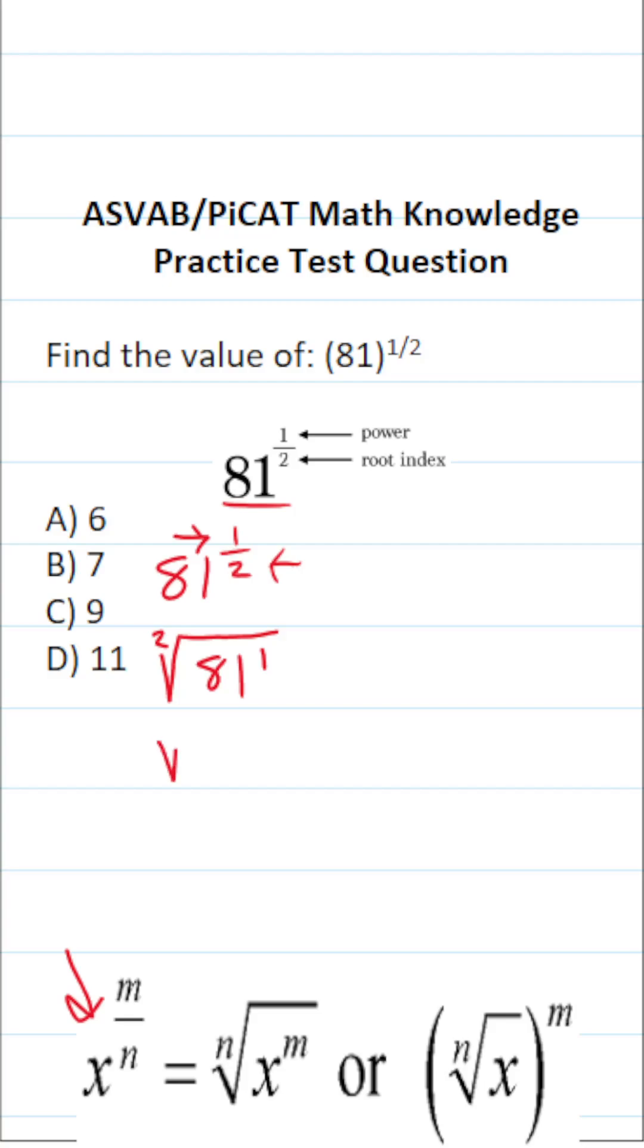81 to the first power is just 81. And this says the square root of 81. So we really don't need to put that 2 there to indicate that this is the square root. Square root of 81 is 9. So this one is C.